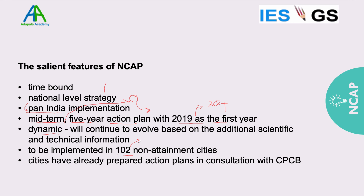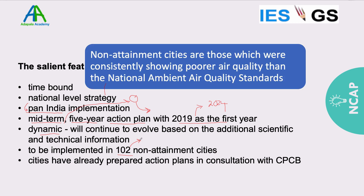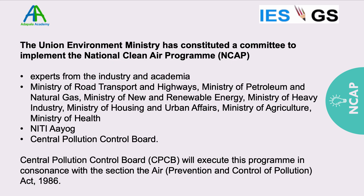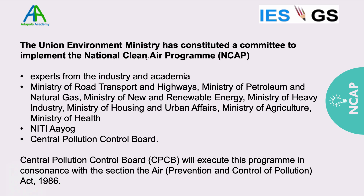The plan is implemented in non-attainment cities — cities which consistently show poorer air quality than the national ambient air quality standards. Data from these cities is monitored and those consistently on the poor air quality side are selected. These cities have prepared action plans in consultation with the Central Pollution Control Board. After the launch, the Environment Ministry constituted a committee to implement NCAP, consisting of experts from industry and academia, and representatives from ministries of Transport, Petroleum, Energy, Heavy Industry, Housing, Agriculture, and Health, along with NITI Aayog and CPCB.